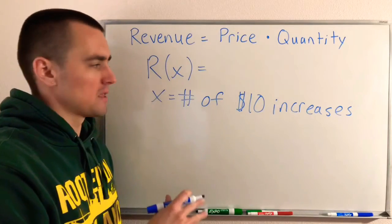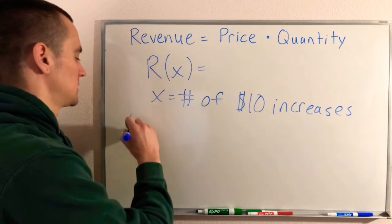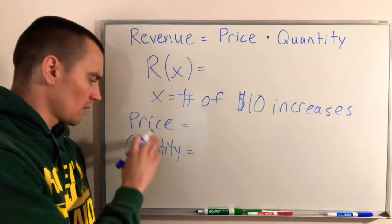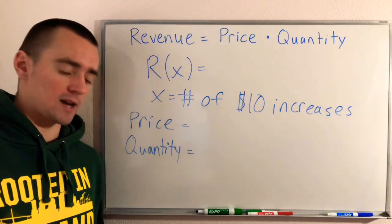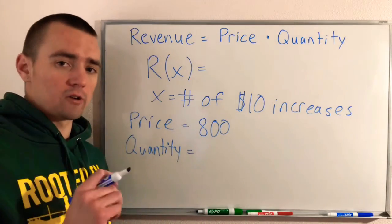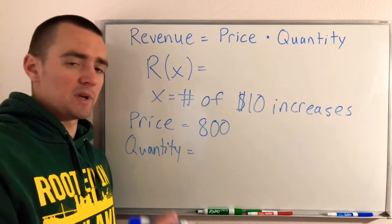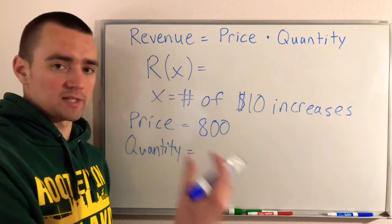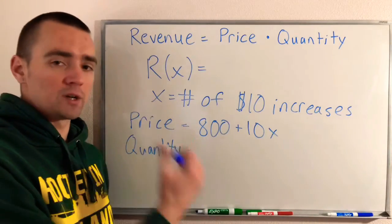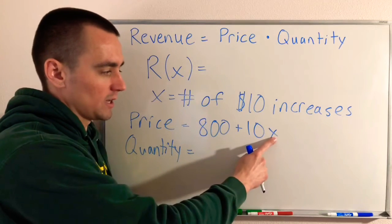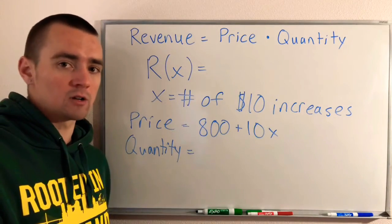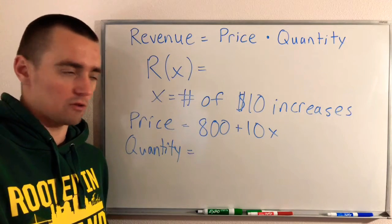Instead of coming straight to our revenue equation, let's think about price and quantity in terms of X. First, the price of each apartment is starting at $800 per month. For each $10 increase we apply, the price is going to go up by $10. So our price will increase by 10 times the number of $10 increases we apply. If we apply one $10 increase, plugging in 1 for X gives us 10 plus 800—our rent would now be $810. If we apply two $10 increases, that's $20, and so on. That'll be our equation in terms of X for the price: Price = 800 + 10X.